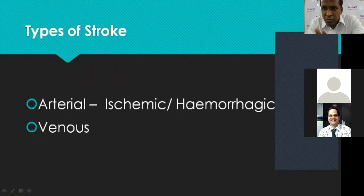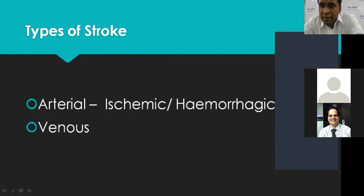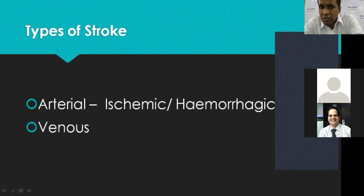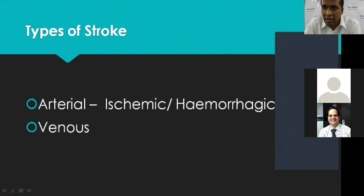There is also a subset of individuals, especially younger patients in India, who present with venous strokes. These patients often present with headache, seizures, and one-sided weakness. It is crucial to identify venous strokes because if untreated they can cause significant disability and mortality. However, if treated, almost 98 to 99 percent of patients with venous stroke can achieve near-total recovery.